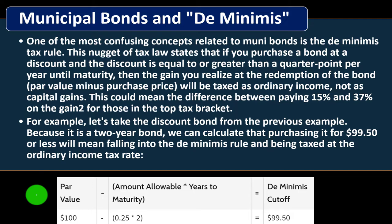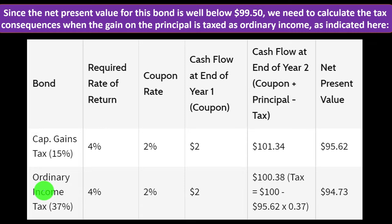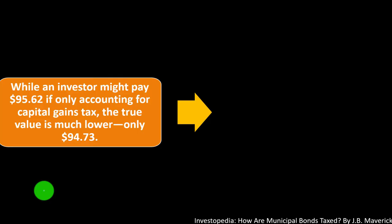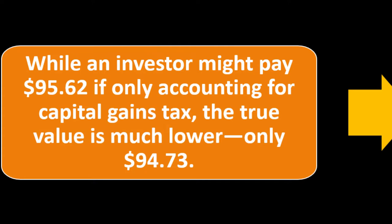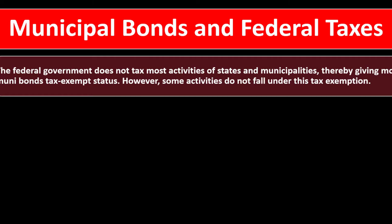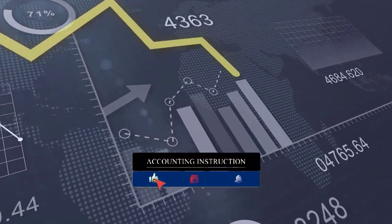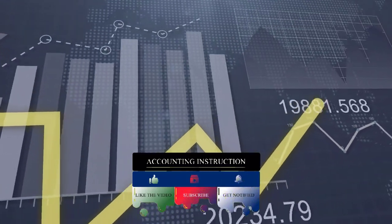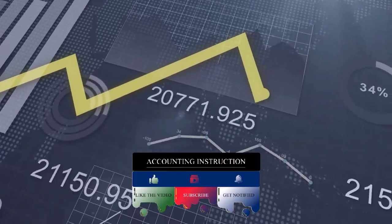For example, since the example bond is a two-year bond, we can calculate that purchasing it for 99.50 or less will mean falling into the de minimis rule and being taxed at the ordinary income tax rate. Since the net present value for this bond is well below 99.50, we need to calculate the tax consequences with the gain on the principal taxed at ordinary income. While an investor might pay 95.62 if only accounting for capital gains tax, the true value is much lower — only 94.73 — at the time of purchase. The buyer must recognize whether the bond is subject to de minimis because the after-tax return could be substantially less than expected.